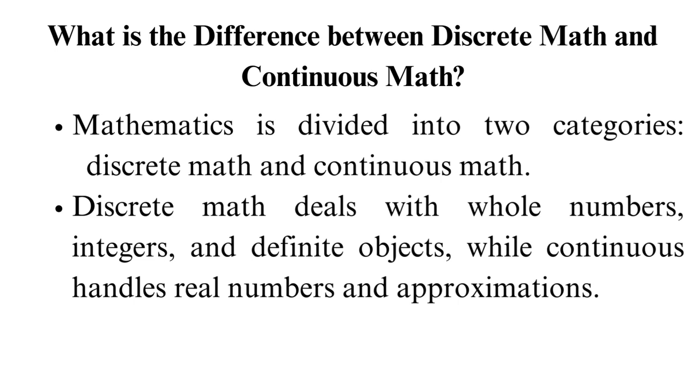To simplify, you can refer to discrete math as representing counts, the number of items, while continuous measures amounts. For example, the weight and volume of an object that are approximations.